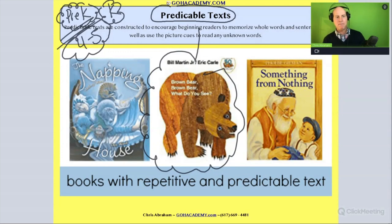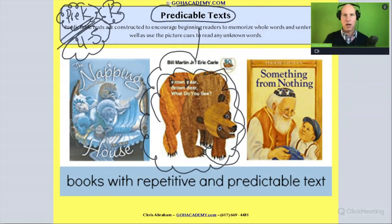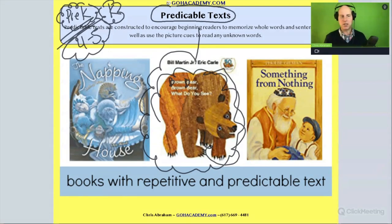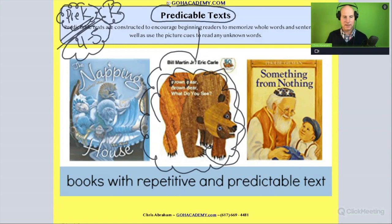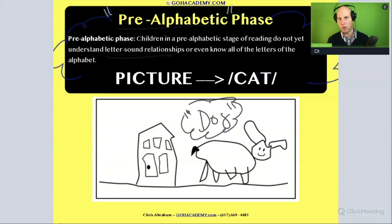Maybe they're using picture cues and the basics of the alphabetical principle — maybe the initial letter. 'B' is for brown, 'B' is for bear. They're using picture cues and initial letters to spot whole words and recall the language of the text. They're not actually decoding — they're using the pictures, the first letter, and memorizing the text. A lot of times children reading Brown Bear, Brown Bear will seem like they know the alphabetical principle, but they don't.